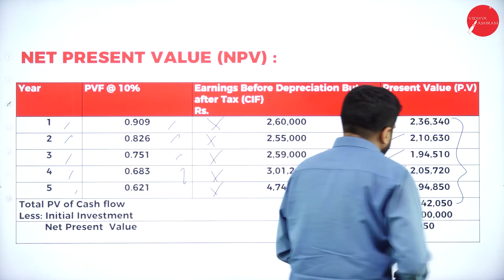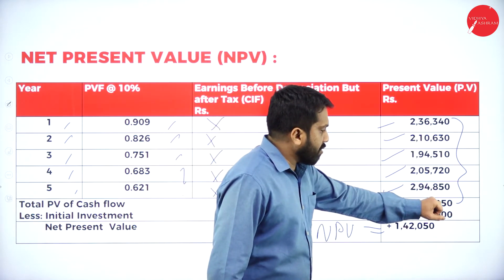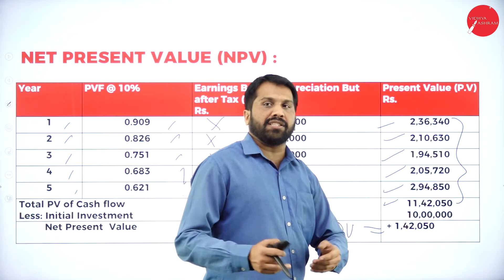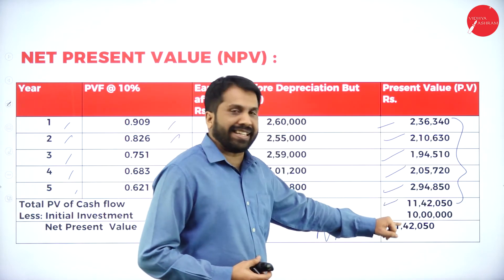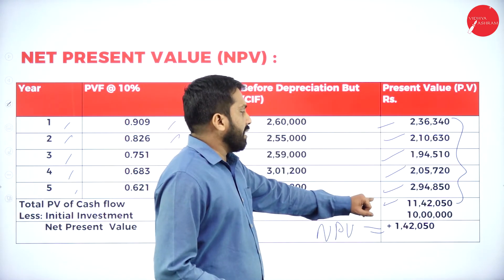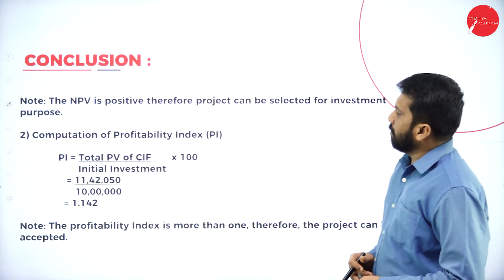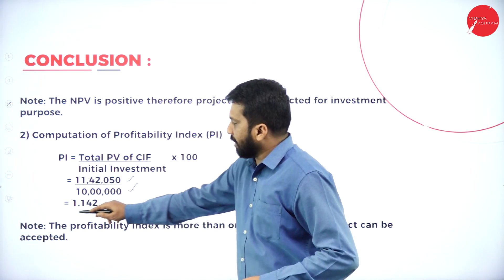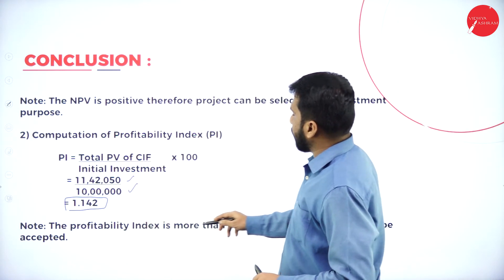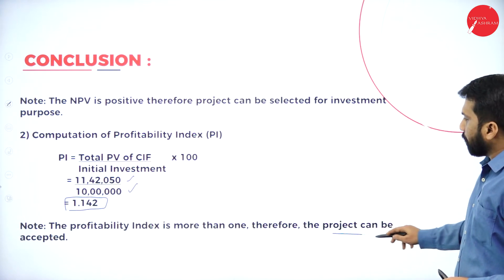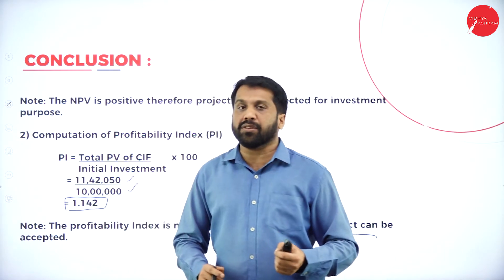For profitability index, instead of deducting, you divide: 11 lakh 42,50 divided by 10 lakh = 1.142. Note that the profitability index is more than 1, therefore the project can be accepted. For every 1 rupee you spend, in return you will get 1.142.